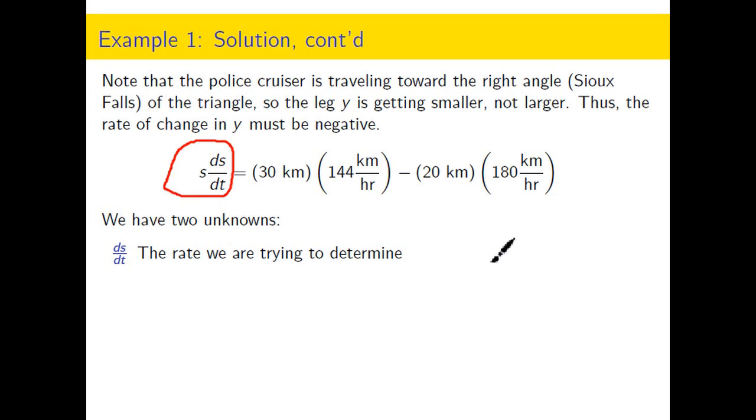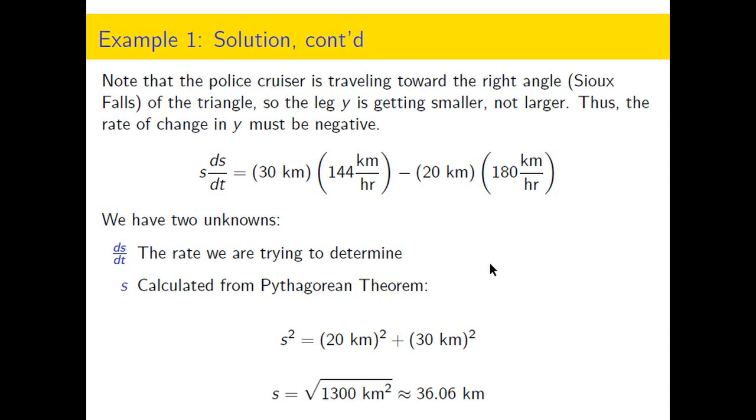And we can calculate S using the Pythagorean theorem, plugging in the 20 kilometers and 30 kilometers. And we do that arithmetic and find that the distance between these vehicles at time zero is 36.06 kilometers.